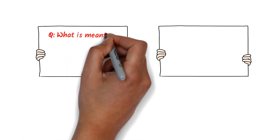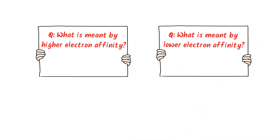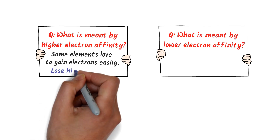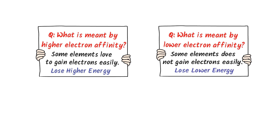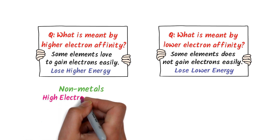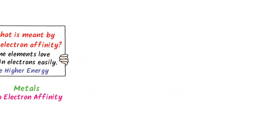Here are my favorite questions: What is meant by higher electron affinity? And what is meant by lower electron affinity? Higher electron affinity means that some elements love to gain electrons easily — after gaining electrons, these elements lose higher energy. On the other hand, lower electron affinity means that some elements don't gain electrons easily — even after gaining electrons, these elements lose lower energy. Remember that non-metals have higher electron affinity and metals have lower electron affinity.